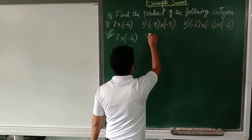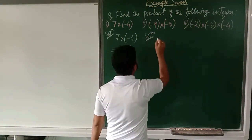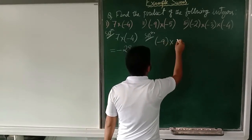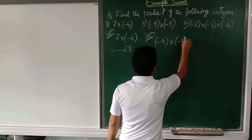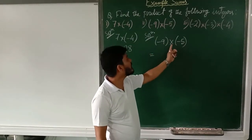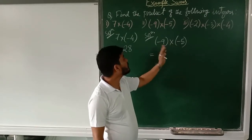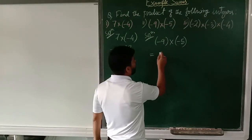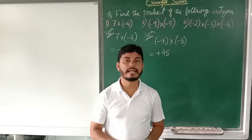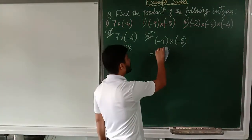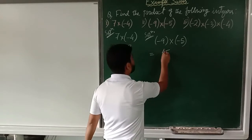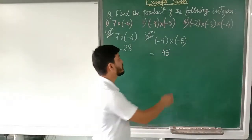Let us see one more example to make it more clear. It is minus 9 multiplied by minus 5. Minus into minus is plus, and 9 fives are 45. Now we do not write the plus sign in front of a positive number, so we write only 45.